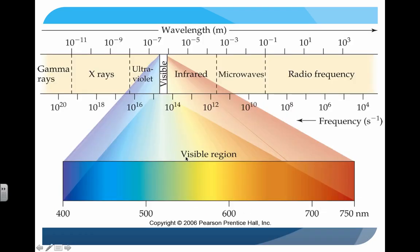This is the EM spectrum itself. Visible light is in a small expanded portion of it. You'll notice there's an inverse relationship between frequency and wavelength — we'll talk more about that in a minute. Radio waves tend to have large wavelengths and small frequencies, whereas at the other end of the spectrum we have really small wavelengths but huge frequencies. Each of these regions represents a different part of the EM spectrum.